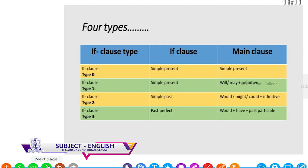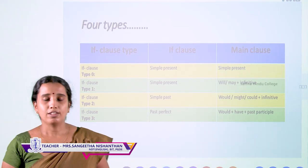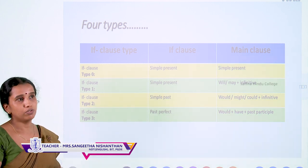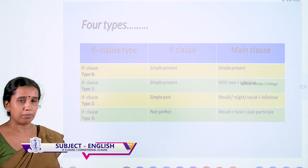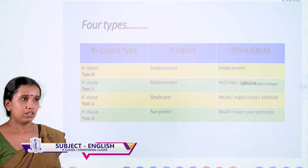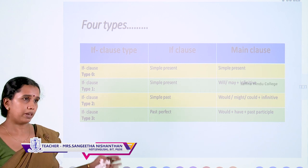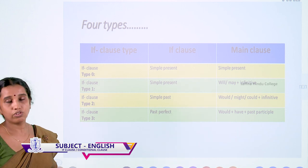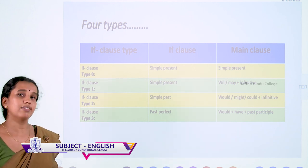Look at these types. For the if-clause type 0, when we express a statement in the if-clause, we should be correct in grammar, otherwise it will change the meaning. We should memorize which tense applies to which type. For type 0, the if-clause is in simple present and the result clause is also in simple present.